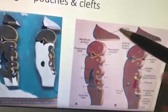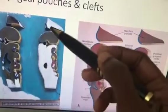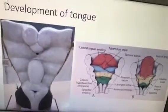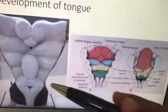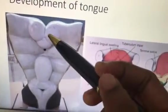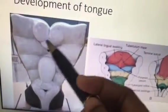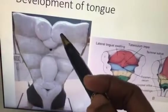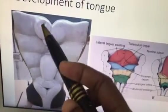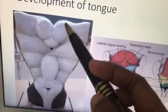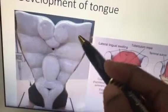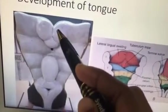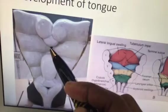In the development of the tongue, here is the maxillary process. The student should tell: there are two lateral lingual swellings and one medial lingual swelling called the tuberculum impar. These three together, derived from the first arch, form the anterior two-thirds of the tongue.